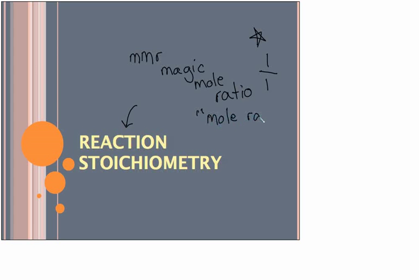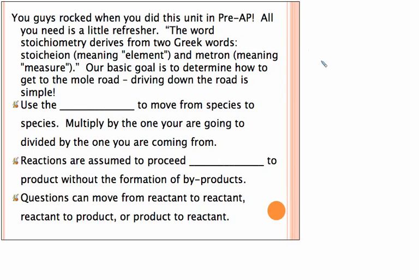If you were in my class or maybe some of the others, we talked about the mole road. Our real goal is to convert anything we're given to moles, so we need to find out what process we need to do to do that. In a stoichiometry reaction, we're going to use that mole ratio. The mole ratio is given by the balancing coefficients, so you have to start with a balanced equation.